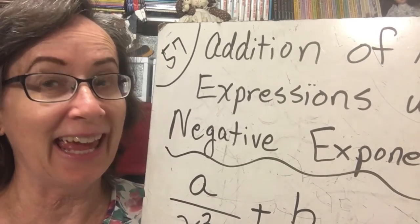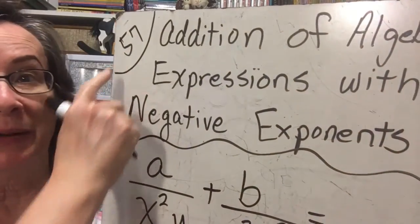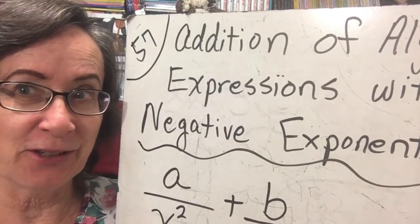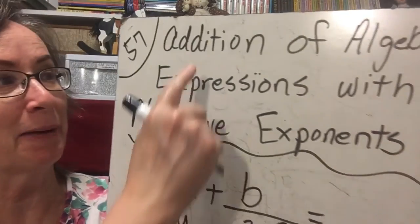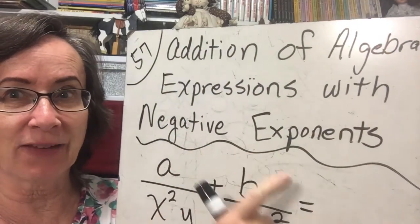Amazing students, this is Mrs. A, and I love math. And tonight we're doing Lesson 57 in your Saxon Orange book, and we're talking about addition of algebraic expressions with negative exponents.